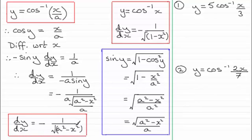So if we have y equals the inverse cosine of x over a positive constant a, or arc cos x over a, we end up with this result: dy/dx equals negative 1 all over the root of a squared minus x squared.